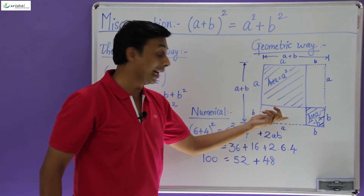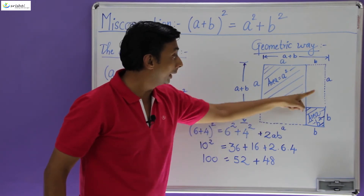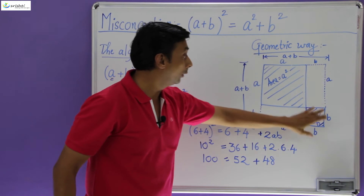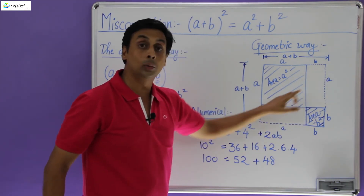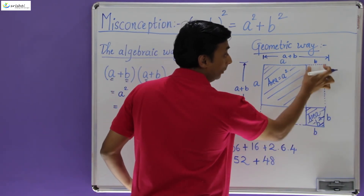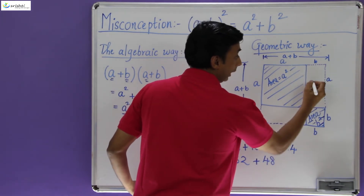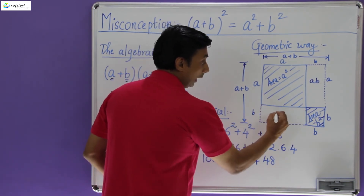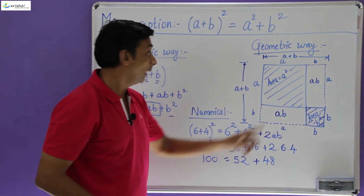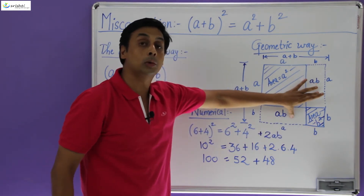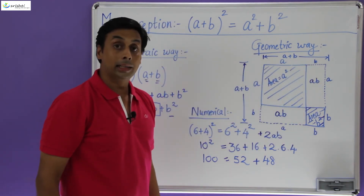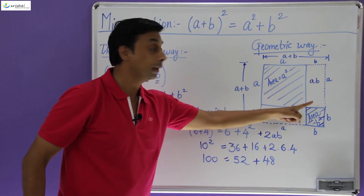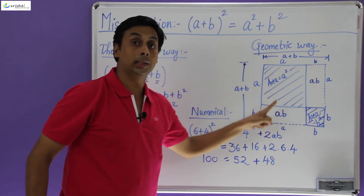Aren't we missing some part? We actually are. Do you notice that we are missing the areas of these two rectangles in this formula? There is a difference between the area of the whole square and the area of the shaded part, and that difference is the area of these two rectangles. The dimensions of this rectangle are a by b, so its area is ab. Similarly, the other rectangle also has dimensions a by b, so its area is also ab. So a² + b² added with these two ab's — that is + 2ab — gives us the area of the whole square.